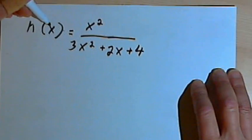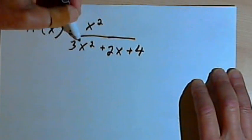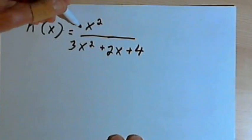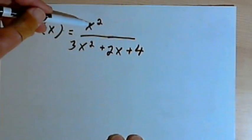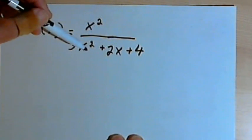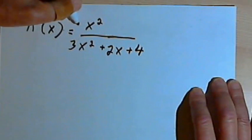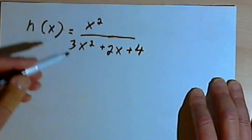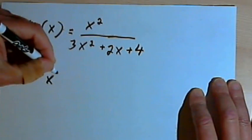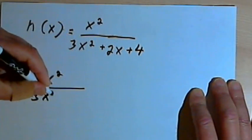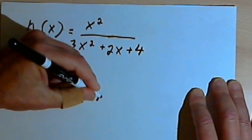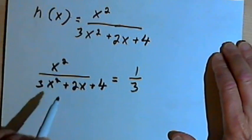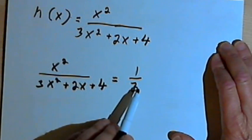This one is h(x) equals x squared over 3x squared plus 2x plus 4. I want to first find out what the horizontal asymptote is. Both the numerator and denominator are second-degree polynomials. The numerator has a leading coefficient of 1 and the denominator has a leading coefficient of 3. So the horizontal asymptote is one-third. I'll take this expression x squared over 3x squared plus 2x plus 4 and set it equal to the horizontal asymptote.